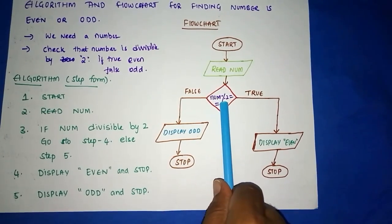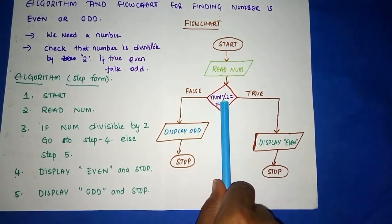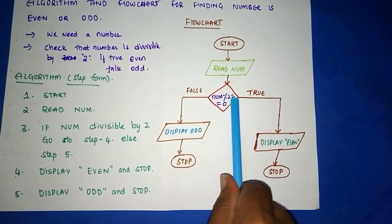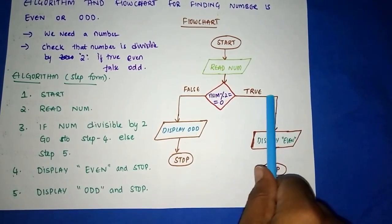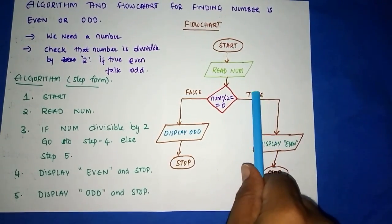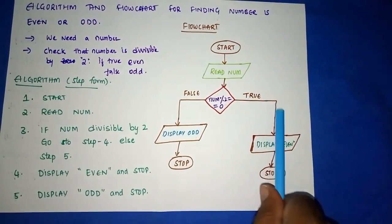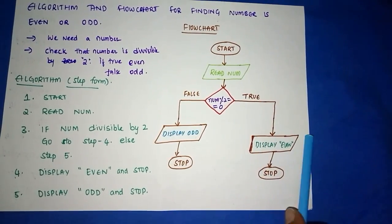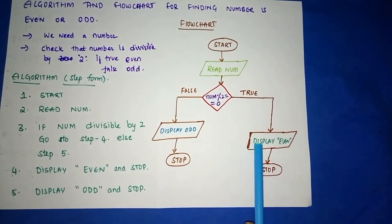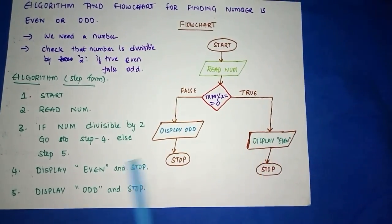If it is true, you come to this side. On the arrow line, you write TRUE. Now what you have written - you have written display EVEN, which is in parallelogram shape. And then after even, you have to stop. So even, stop, finished.